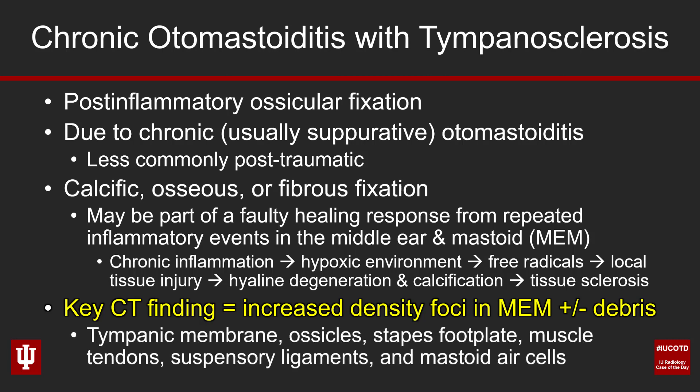Where does tympanosclerosis specifically affect? Think about the sound conduction pathway — those are the structures involved. It can involve the tympanic membrane; if it involves only the tympanic membrane, we call it myringosclerosis, which is a subtype. Much more commonly, I see it involve the ossicles, the stapes footplate, and the muscle tendons like the stapedius or tensor tympani, as in this case. Another great place to look is the ossicular suspensory ligaments — the marionette strings that hold up the ossicular chain. It can also involve the mastoid air cells with increased density.